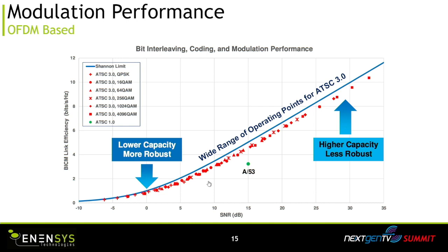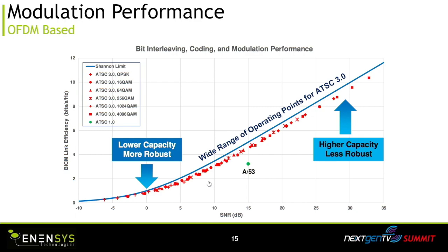Most of the trials are around 25 megabits, but there are some deployments using more than 35 or 40 megabits per second. Especially in an SFN situation — if you put SFN in place, you could have a signal which is not very robust, but thanks to SFN you will have very nice coverage to allow everybody to receive the signal. You choose your bandwidth according to the robustness of the signal and put in place your coverage with different transmitters.